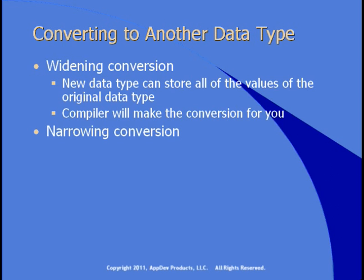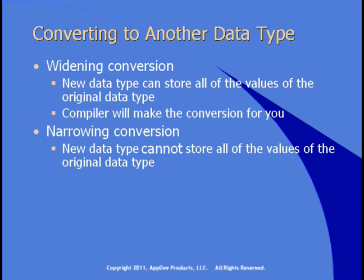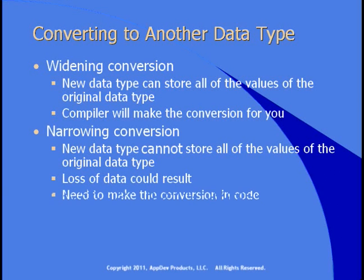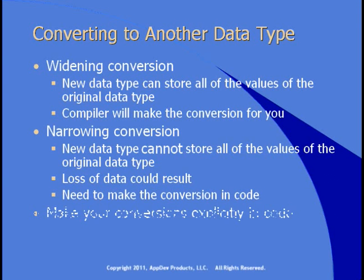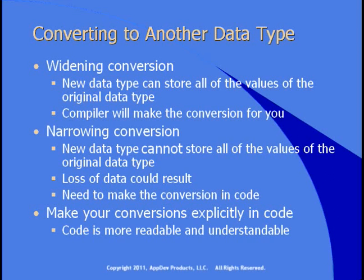The other type of conversion is a narrowing conversion. In a narrowing conversion, the new data type is not capable of storing all of the values that can be stored in the original data type. For example, if you convert an integer to a byte, there could be data loss. Because of that, the compiler will not automatically make the conversion — you'll need to make the conversion yourself in code. In general, you should probably make your conversions explicitly anyway because your code is more readable and understandable.